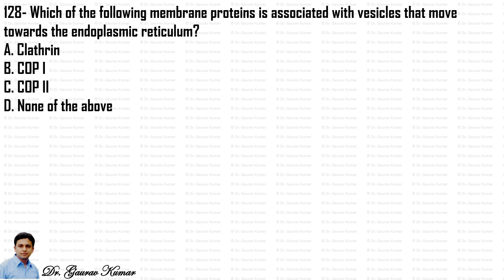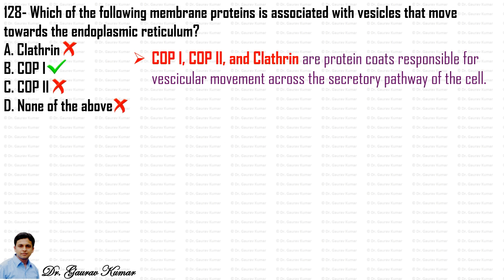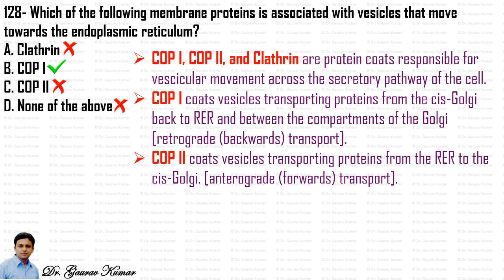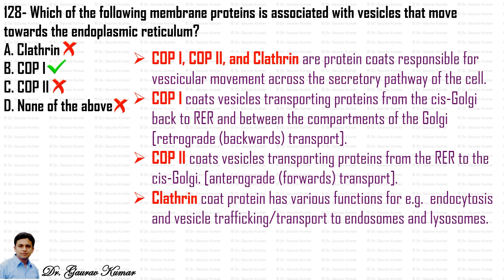Next question: which membrane protein is associated with vesicles that move towards the endoplasmic reticulum? The answer is COP-I. COP-I, COP-II, and clathrin are protein coats responsible for vesicular movement across the secretory pathway. COP-I coats vesicles transporting proteins from the cis-Golgi back to the RER and between Golgi compartments (retrograde transport). COP-II coats vesicles from RER to cis-Golgi (anterograde transport). Clathrin is involved in endocytosis and transport to endosomes and lysosomes. Since the question asks about movement towards the ER, the answer is COP-I.